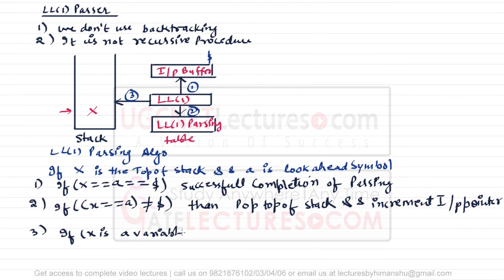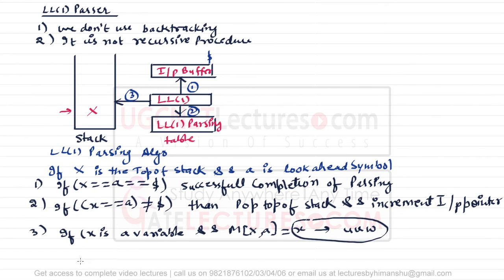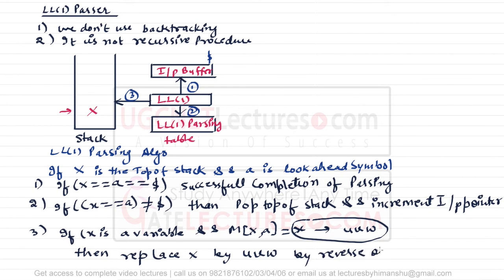Step three: if X is a variable and M[X, a] equals the production X → uvw, then we replace X by uvw in reverse order on the stack. I will explain what all these things mean step by step.